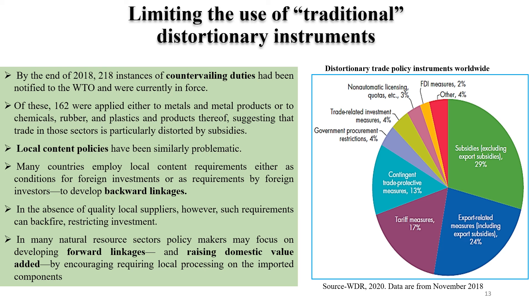Subsidies are contributing almost 29 percent of distortionary policies and tariff measures 17 percent. Many countries also have local content policy because the country wants to develop backward linkages, but this should not be considered a general policy for all sectors. Countries need to be very clear in which sector they can develop the backward linkage and in which sector they can allow it to develop naturally. In some cases local content policies may be required; in some cases they may not be required.